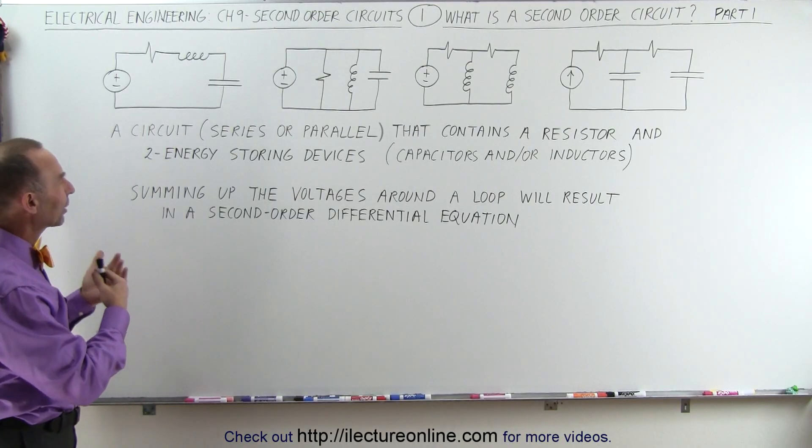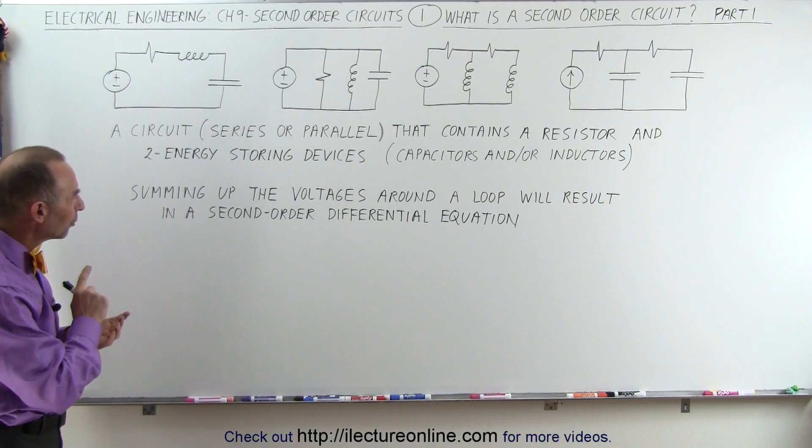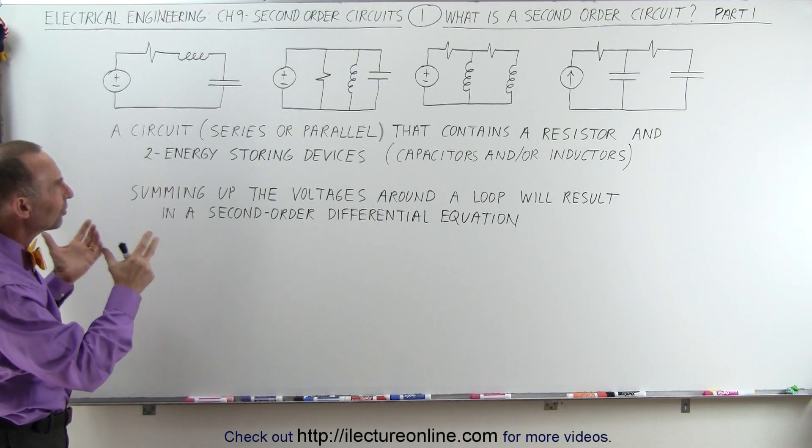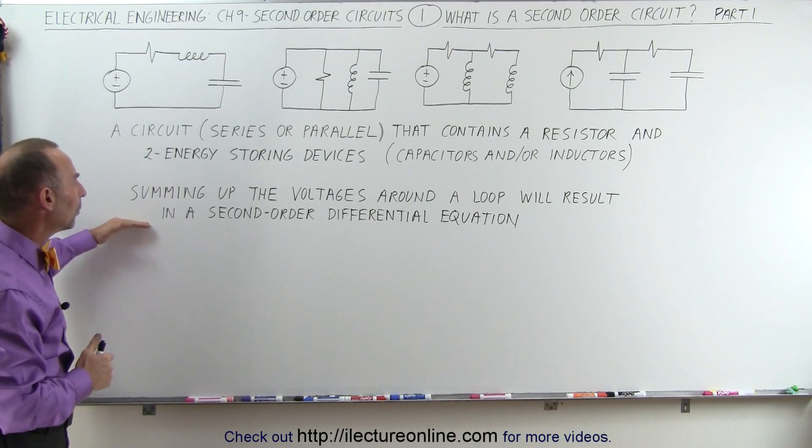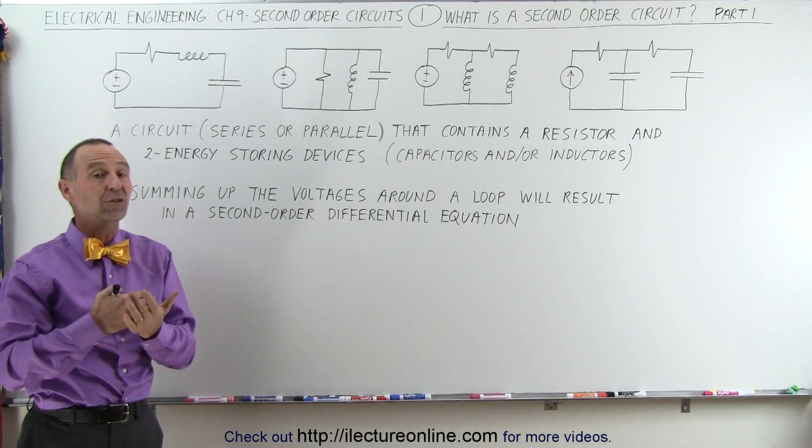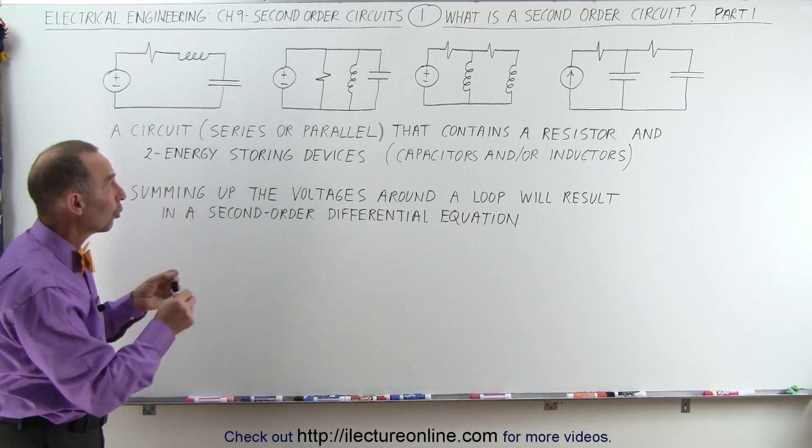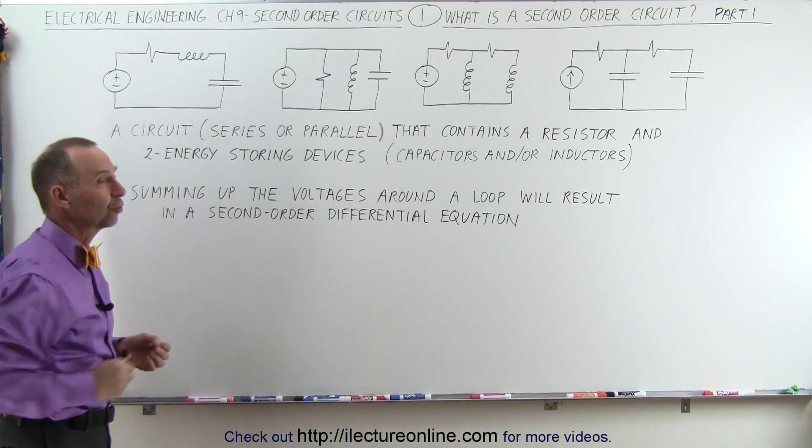Those are called second-order circuits. The reason for that is when you start summing up the voltages around any of the loops inside the circuits, you will end up with a second-order differential equation, and so that's what sets it apart from first-order equations, because those only have one energy storing device.